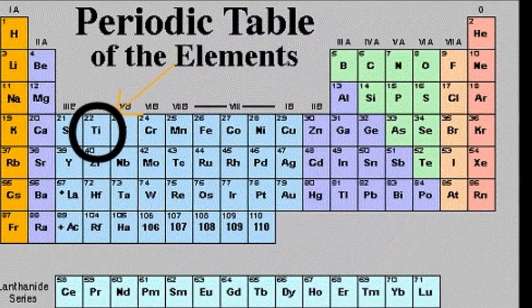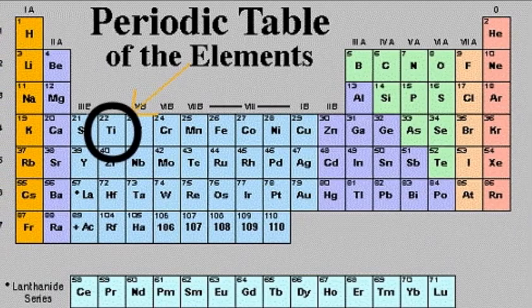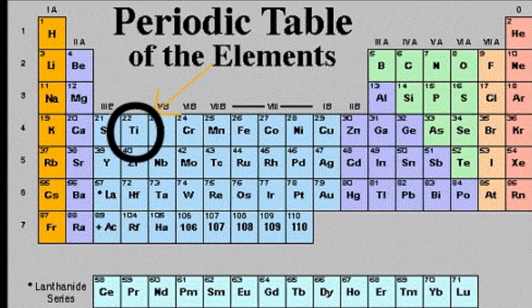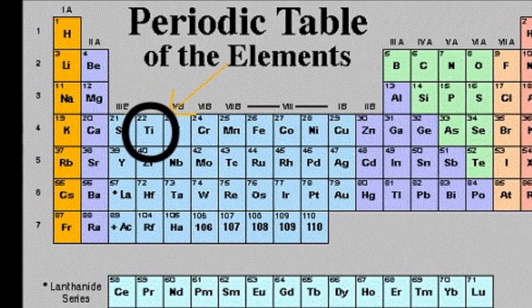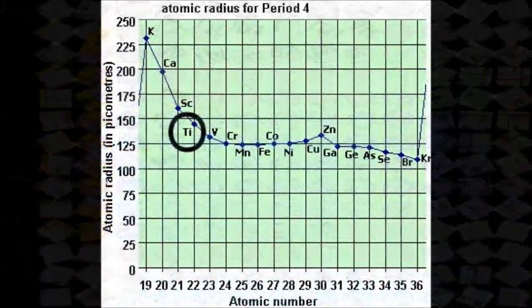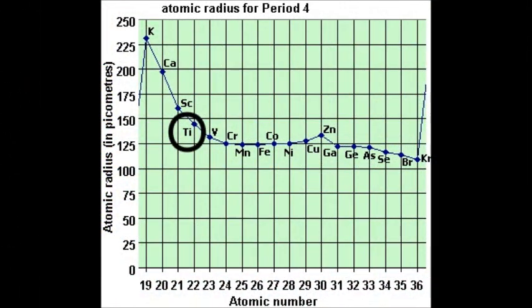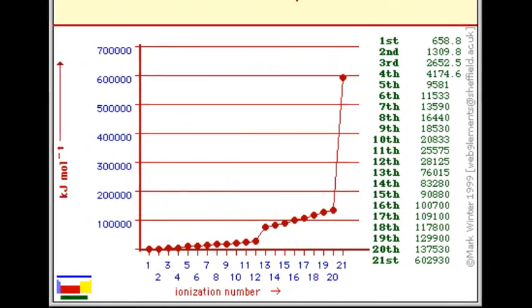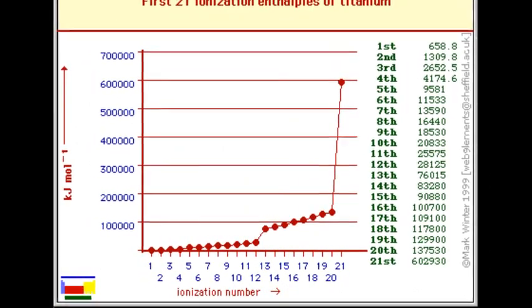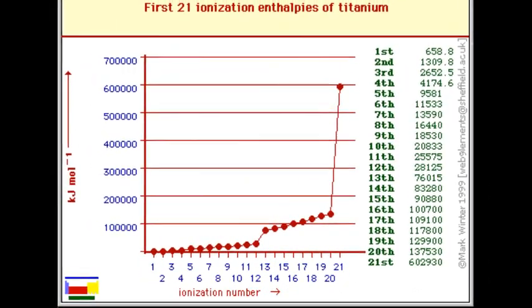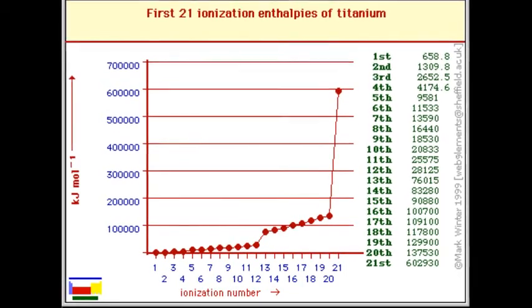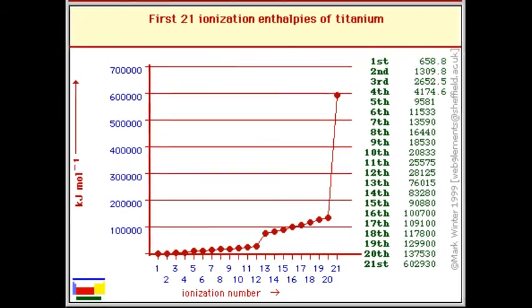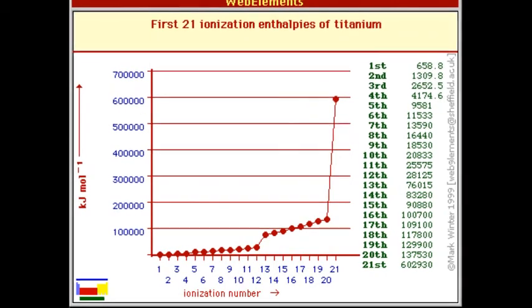Titanium is the 22nd element on the periodic table. It is in group 4 as well as period 4. It is part of the transition metal category, otherwise known as the D-block. Some more specific atomic characteristics include an atomic radius of 176 picometers, an electron affinity of 7.62 kilojoules per mole, an electronegativity of 1.540, and a first ionization energy of 658.811 kilojoules per mole.